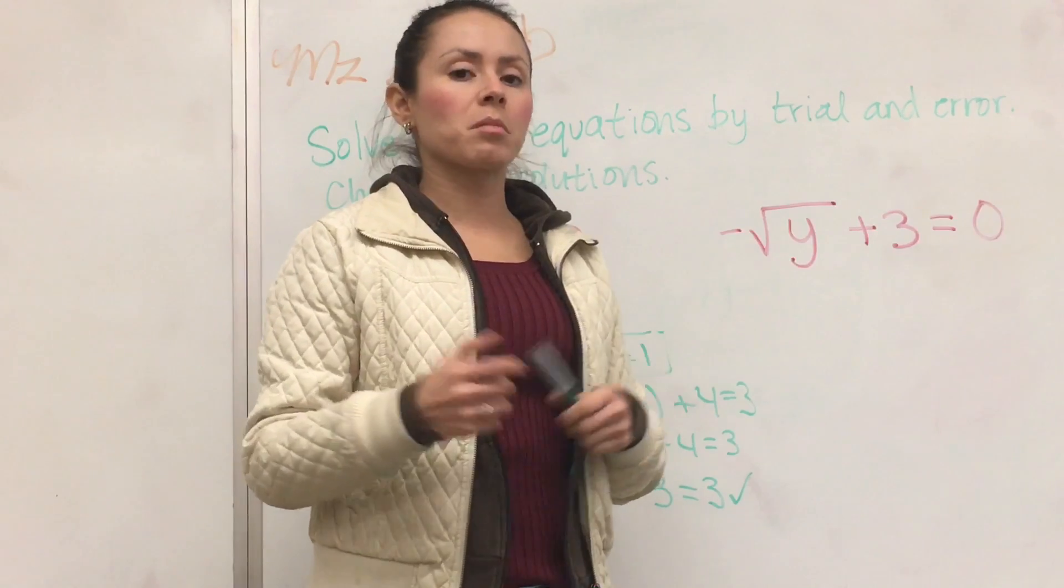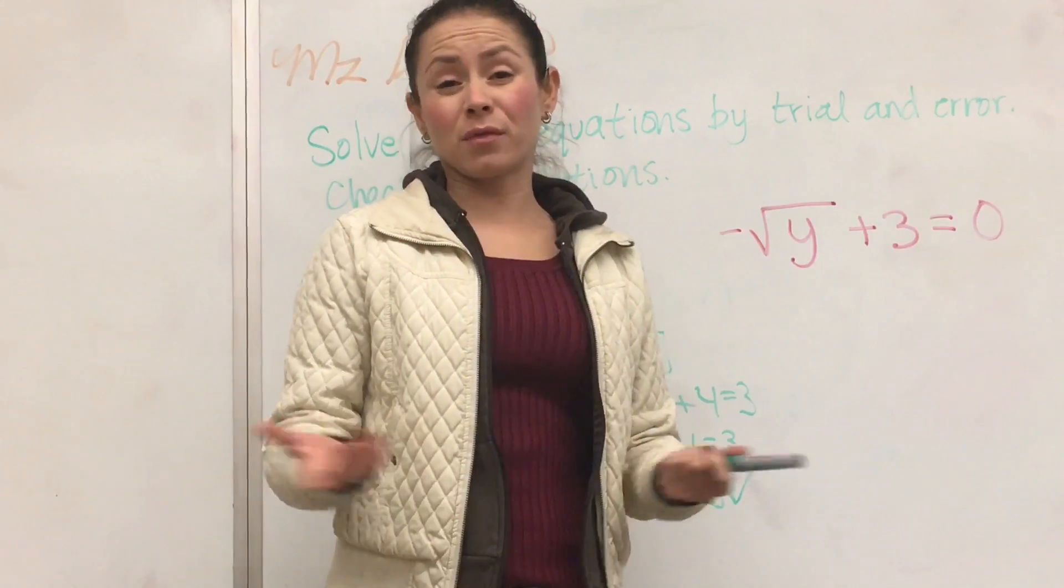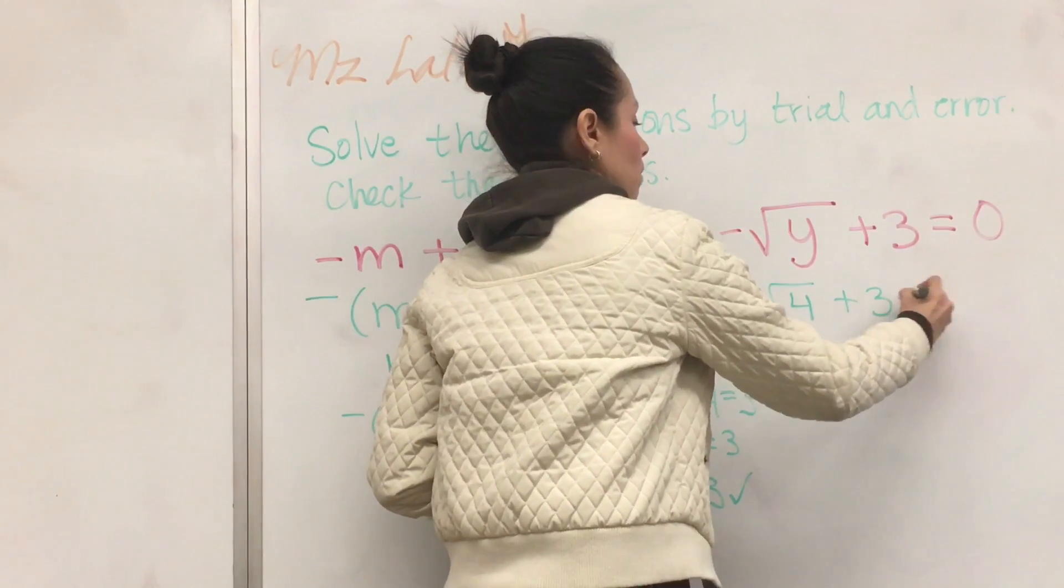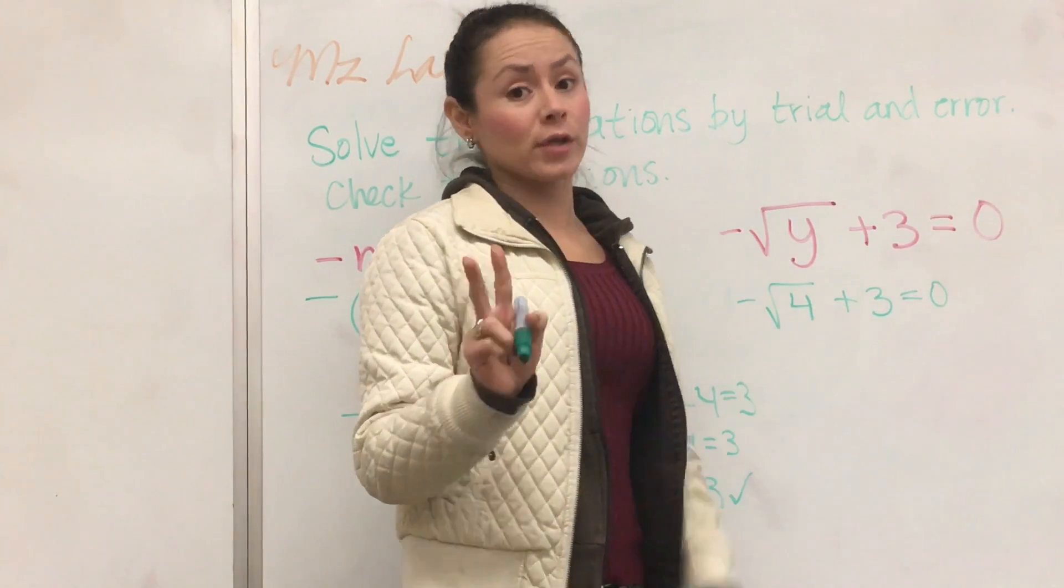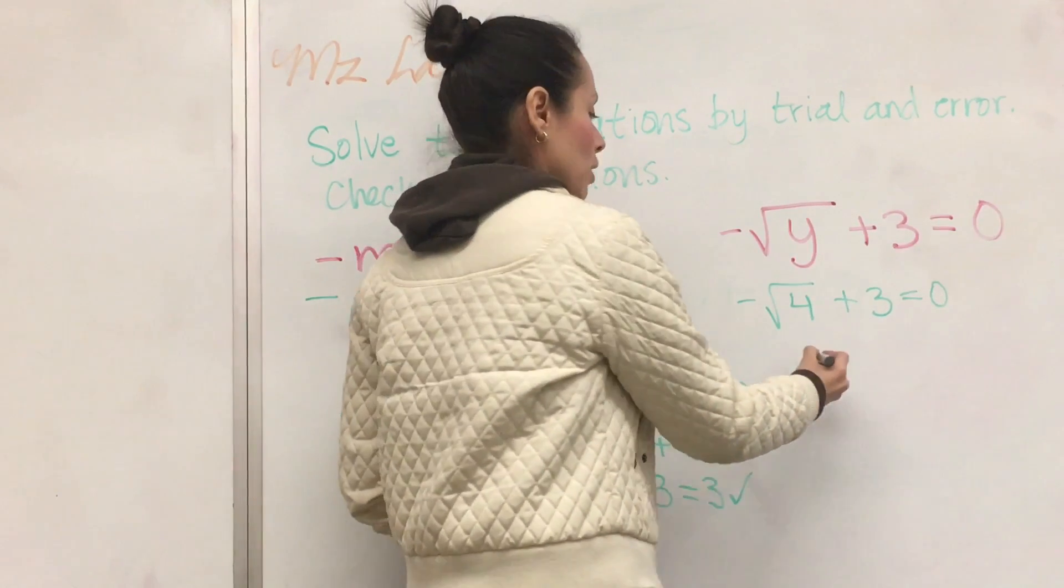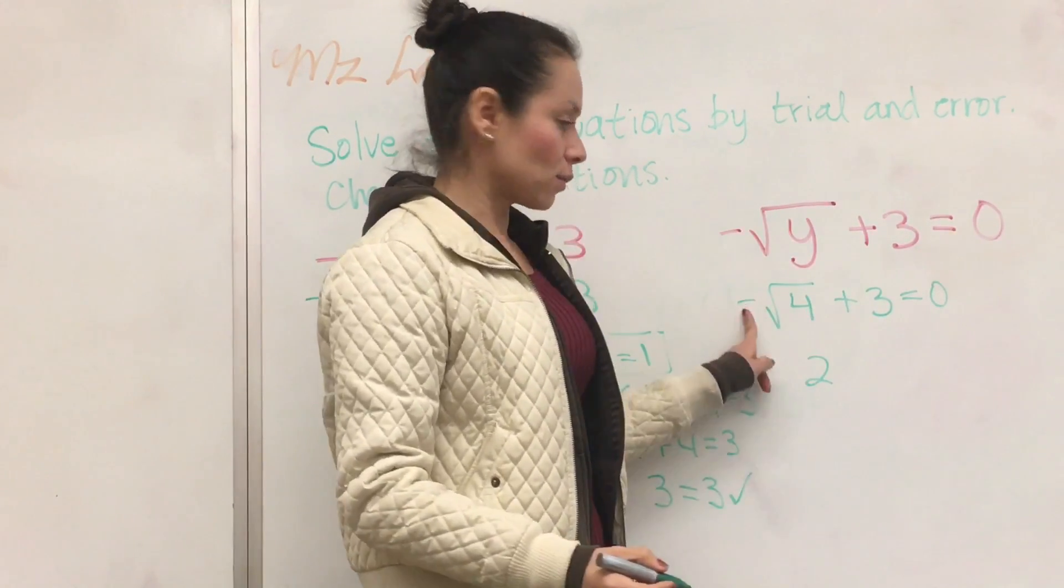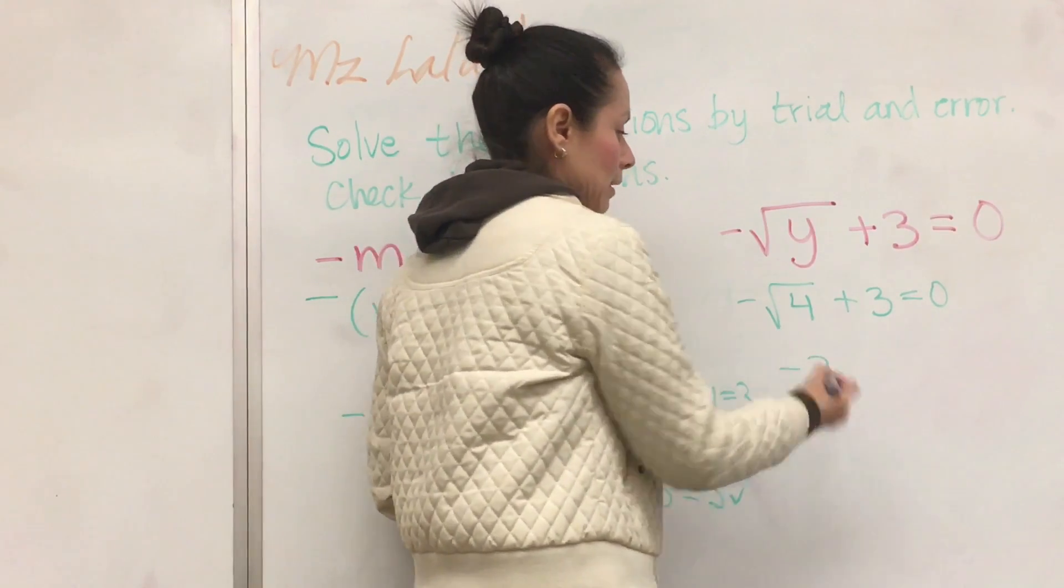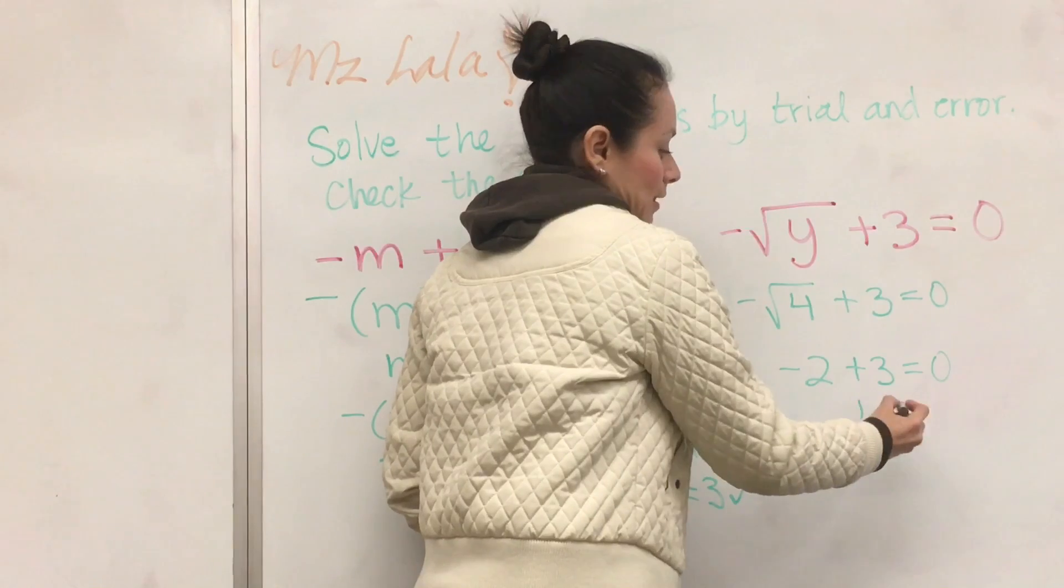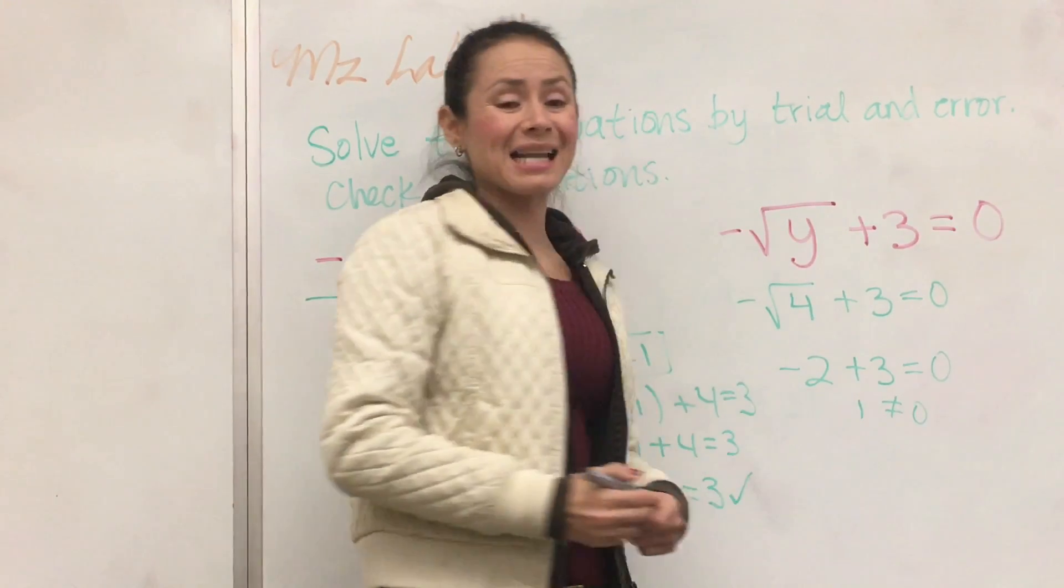What square root can we find an answer to that when we add 3, we get 0? Let's try the square root of 4. So the square root of 4 is 2, right? Because 2 times 2 is 4. One number times itself gives you that number. So bringing down this 2, this negative, you must also bring it down.